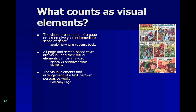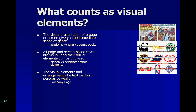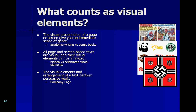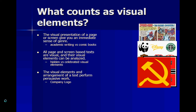The visual elements and arrangements of a text perform persuasive work. The example the author gives is a company logo. Looking at logos like Disney, Toyota, Harley Davidson, and Coca-Cola, each brings a different idea to mind — Disney suggests children's content, Toyota suggests vehicle reliability. This is also true of logos representing ideology — one logo can serve a very different persuasive motive than another, and both can invoke very strong images in the viewer's mind.